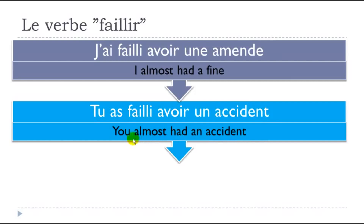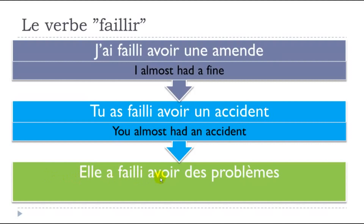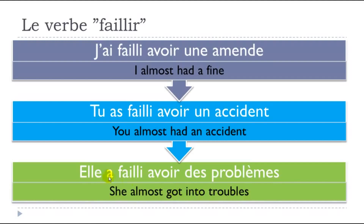The second example: tu as failli avoir un accident — you almost had an accident. And the last example: elle a failli avoir des problèmes — she almost got into trouble. In these cases, you use faillir at the passé composé followed by avoir and something. It's quite useful, and not rare that we use this verb faillir.